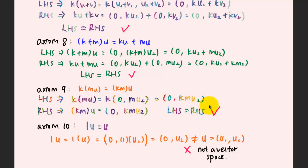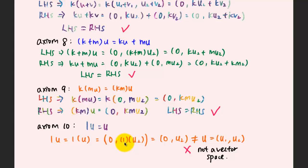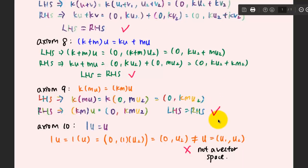This is equivalent to the left-hand side, so axiom number 9 is fulfilled. For axiom number 10, one multiplied with u should give back the original vector u. Since this involves scalar multiplication, the first entry must be 0 and the second entry is u2 times 1, giving 0 and u2. But this is not equivalent to the original vector u1, u2. Therefore axiom number 10 is violated and this is not a vector space.